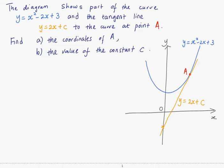The diagram shows part of the curve y equals x squared minus 2x plus 3 and the tangent line, which is the orange line, y equals 2x plus c, which is tangent to the curve at point A. You are to find the coordinates of A and the value of the constant c.